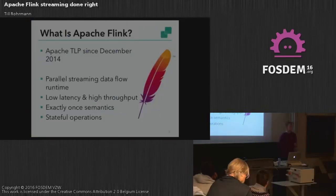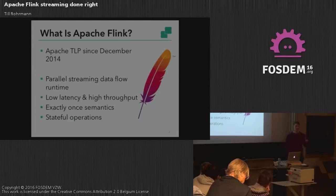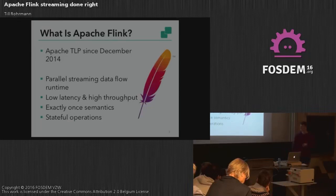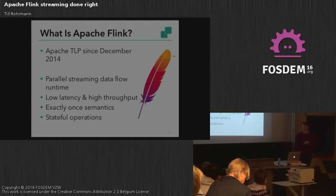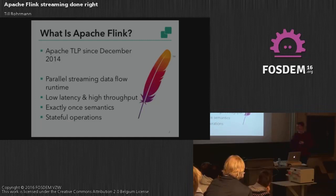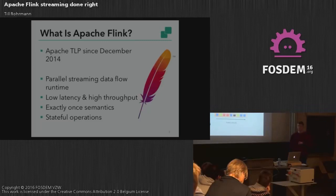For those of you who haven't heard about Flink, it's an Apache top-level project since December 2014. Right now it has become quite active with about 150 contributors working on the project. In a nutshell, Apache Flink is a parallel streaming dataflow with which you can do stream as well as batch processing. The runtime is capable of giving you low latency as well as high throughput if you set the configuration right. It has a fault tolerance mechanism which gives you exactly-once semantics, and it lets you do stateful operations.